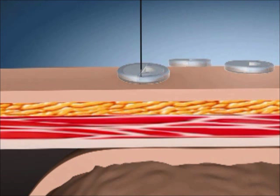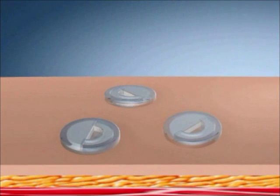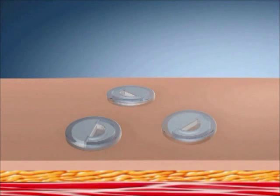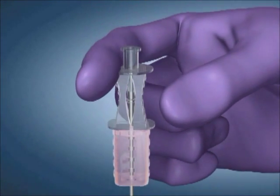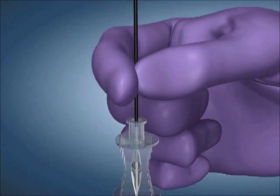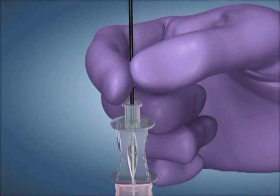Creating the stoma tract. With the stomach still insufflated and in apposition to the abdominal wall, identify the puncture site at the center of the gastropexy pattern. Insert the safety introducer needle into the gastric lumen. Advance the J-guide wire, J-end first, through the needle into the gastric lumen and confirm position.